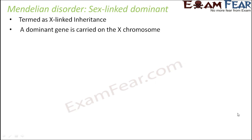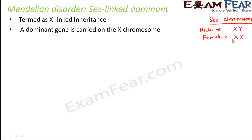Now let's talk about the third type of Mendelian disorder: sex-linked dominant disorder. This is also termed X-linked inheritance because the transmission happens through the sex chromosomes — specifically the X chromosome. The gene responsible for the genetic disorder is located on the X chromosome. Out of the 46 chromosomes we have, two are sex chromosomes: XY in males and XX in females. In sex-linked dominant inheritance, the dominant defective gene is carried on the X chromosome.